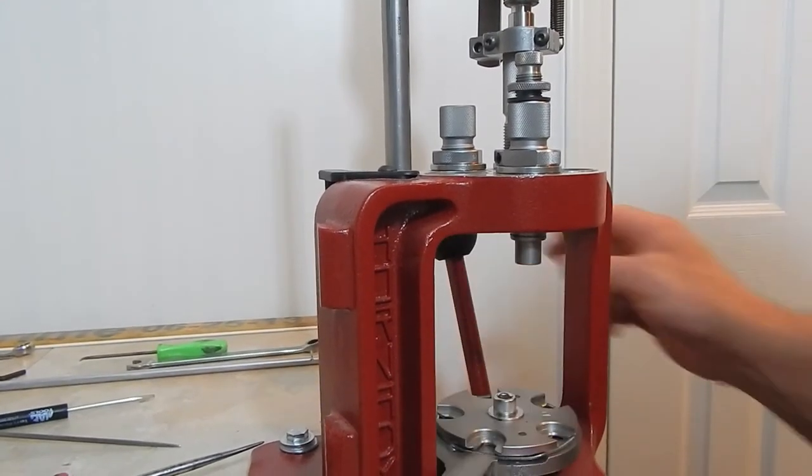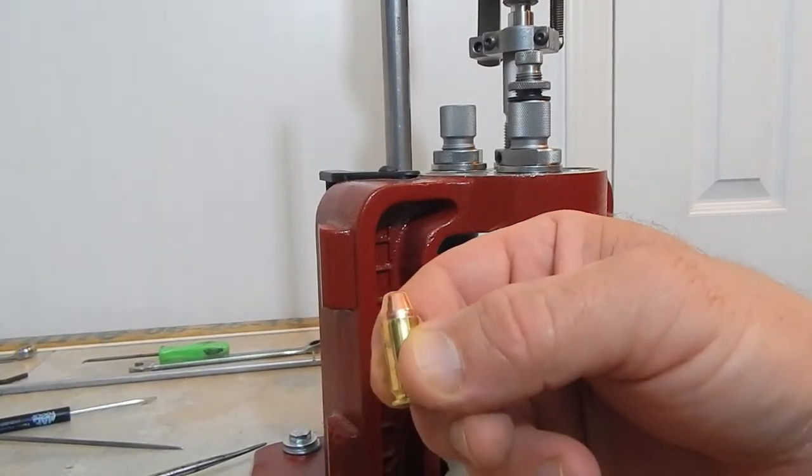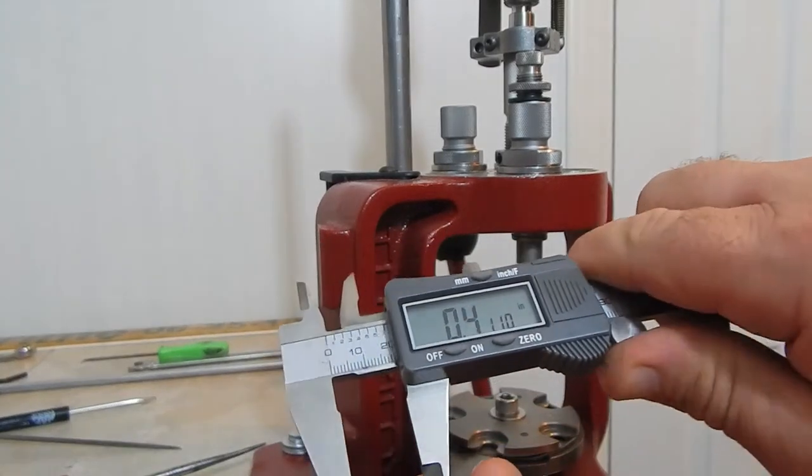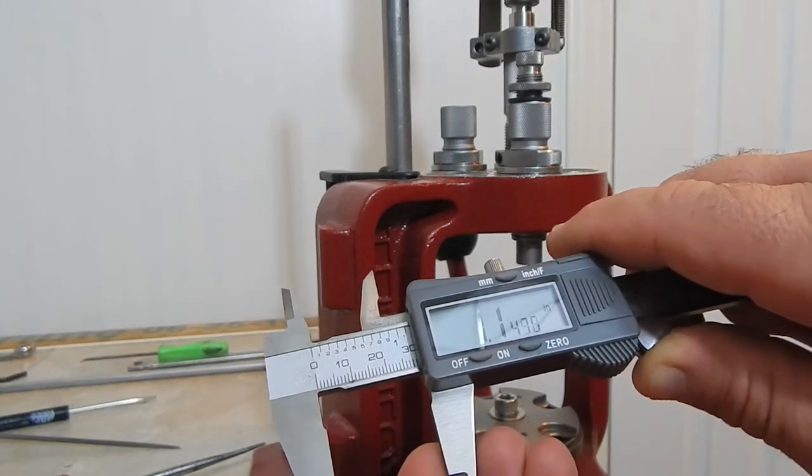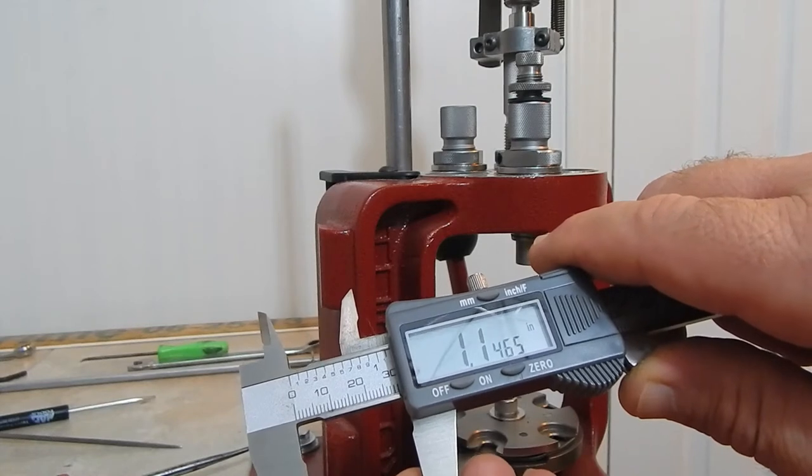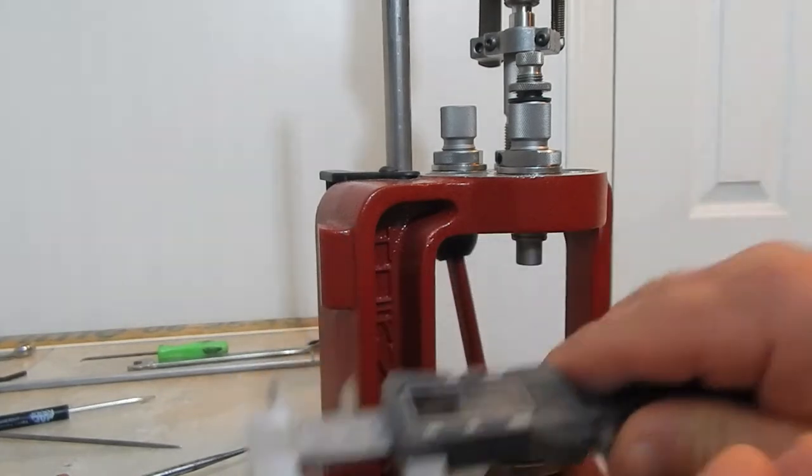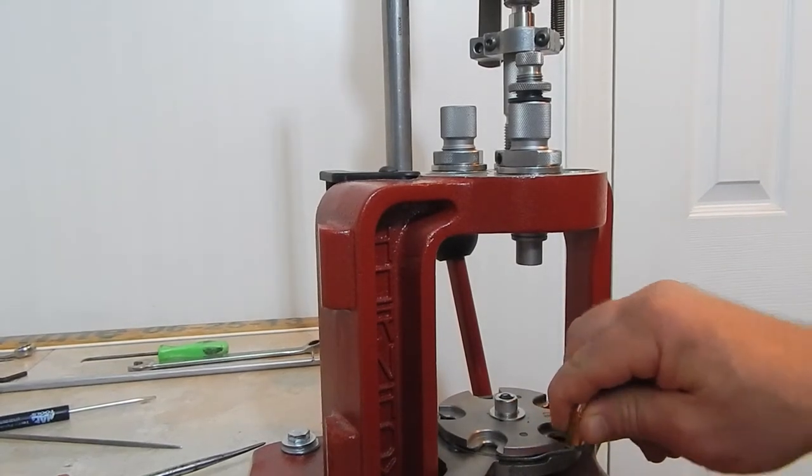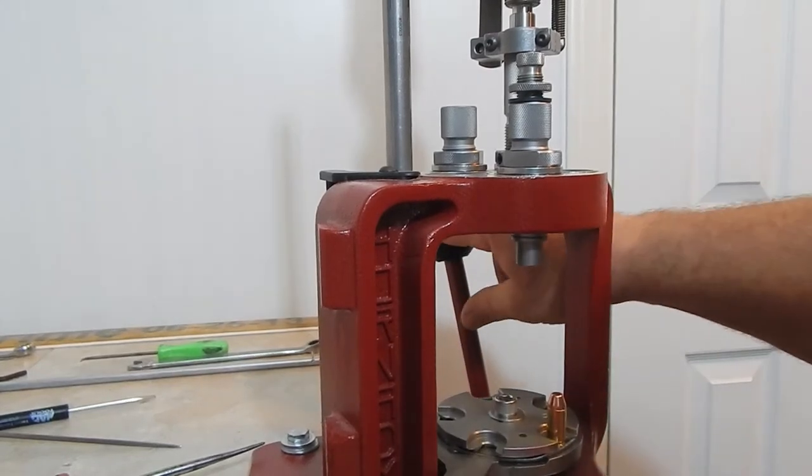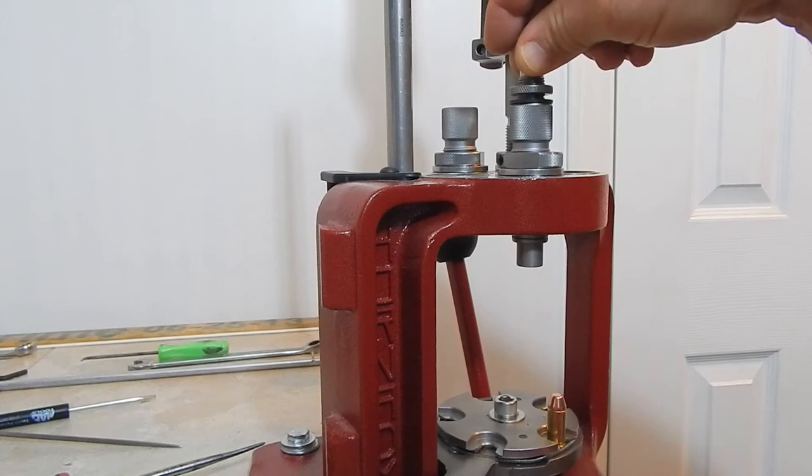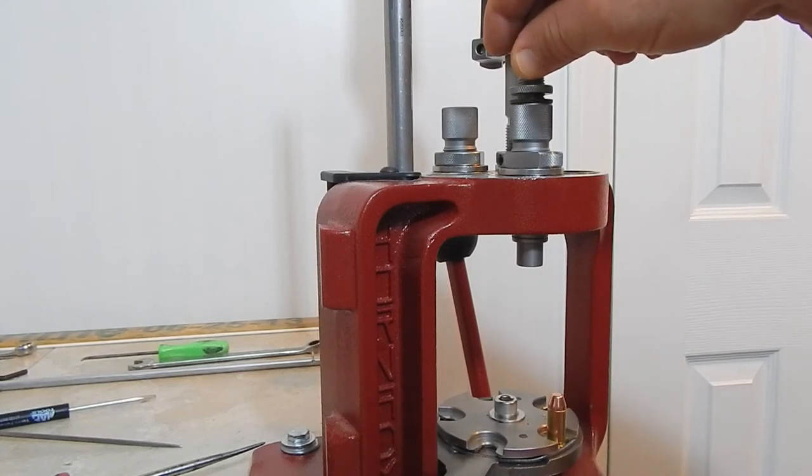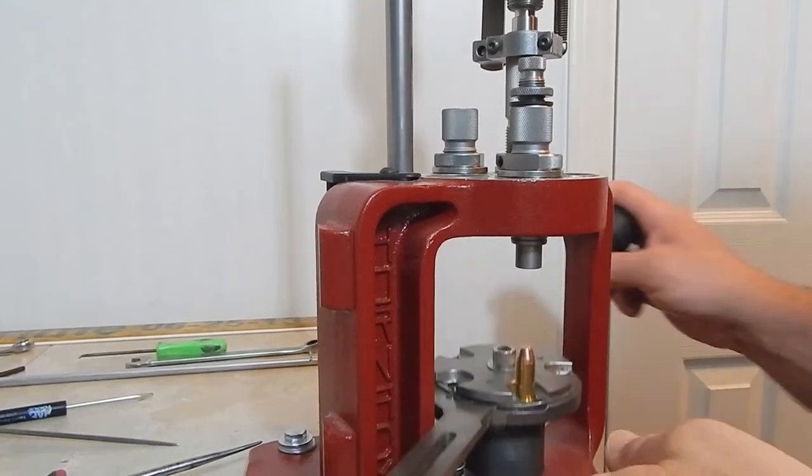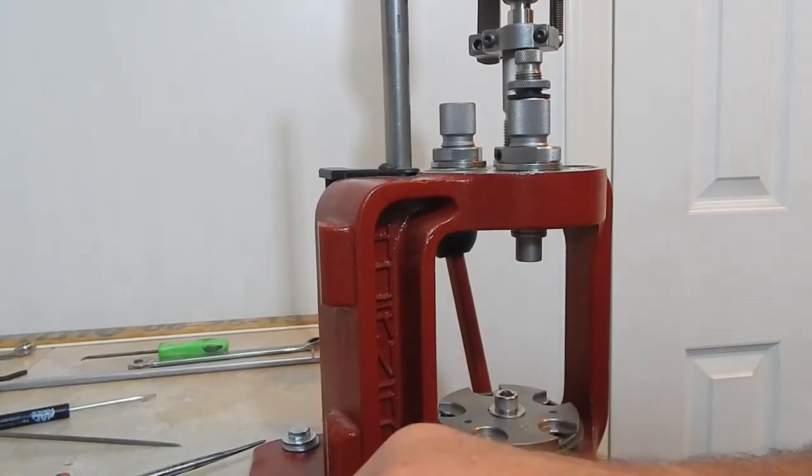1.1465. We're getting close. We're going to start making smaller adjustments now. Same bullet back in station next in line for the bullet seater die. Let's go about, I don't know, almost half a turn. And let's see what we got.